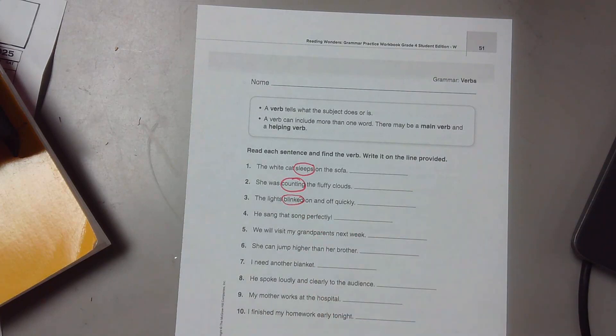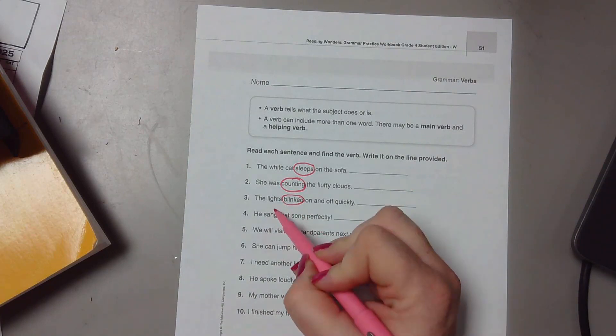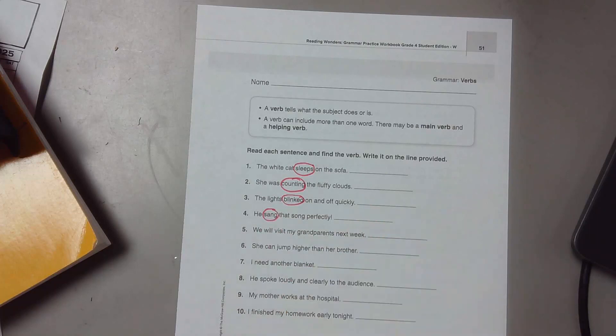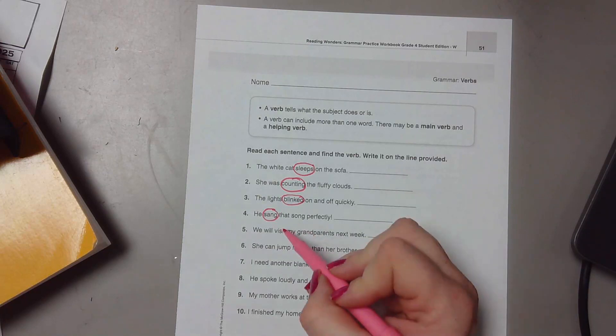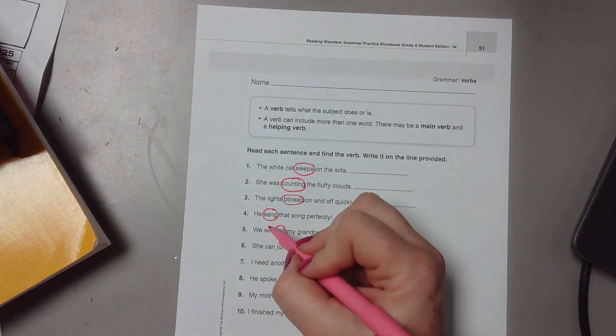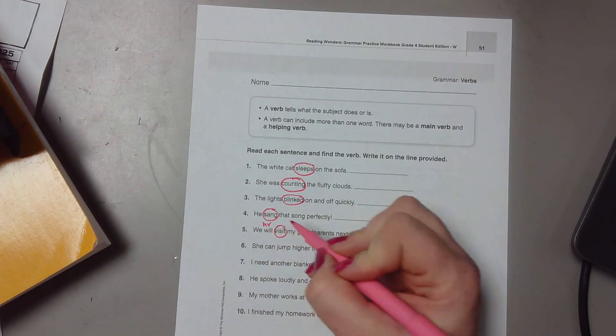He's saying that song perfectly. Saying. Number five: we will visit my grandparents next week. Will visit. Will is the helping verb, visit is the verb.